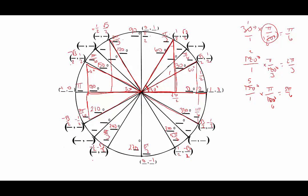Now instead of 30-degree increments, we're going to count by 45-degree increments. The first is 45 degrees, equivalent to pi/4. The triangle is an isosceles right triangle with hypotenuse 1. Using the Pythagorean theorem: x² + y² = 1, and since x = y, we get 2x² = 1, x² = 1/2, so x = y = √2/2. The coordinates are (√2/2, √2/2).